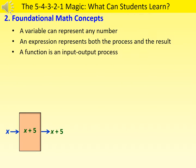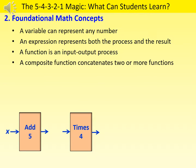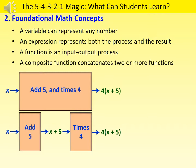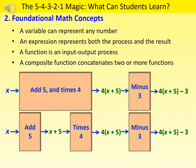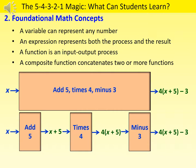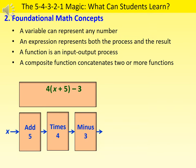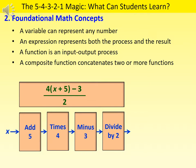A function is a process that takes an input, does something to it, and generates an output. Hence, a function has three components: an input, a rule, and an output. When two functions are connected sequentially such that the output of one function becomes the input of another, we can replace them with a single composite function. We can concatenate a third function and represent the three functions by a single composite function. Concatenating multiple functions can reinforce students' understanding of composite functions.